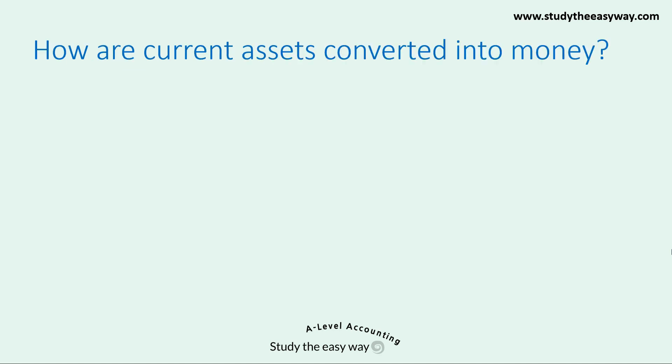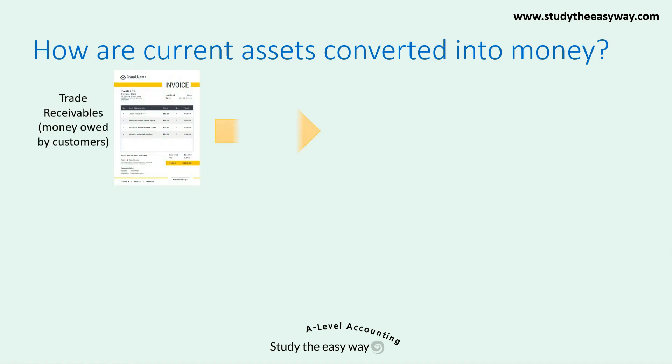So how are current assets converted into money? Let's start with trade receivables. Trade receivables refers to money being owed to the business by customers as a result of a credit sale transaction. This is converted into money simply by collecting that money owed from the customers.